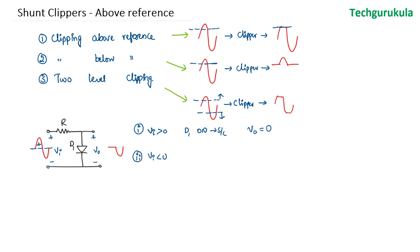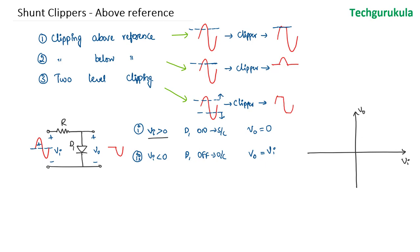In the second case, where Vi is less than zero, the diode is open circuit — D1 is off. When the diode is open circuit, the current flowing through the resistor is zero, so the output voltage equals the input voltage. We can draw the transfer function with Vi on the x-axis and V0 on the y-axis: when Vi is greater than zero, V0 is zero; when Vi is less than zero, V0 equals Vi, giving a 45-degree line.